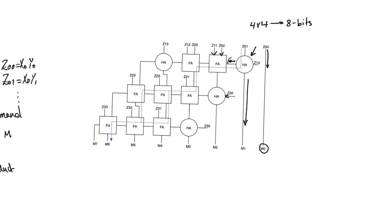In the next bit position we have three partial products plus the carryout from the previous position. To add them we first use a full adder combining the carryout with z02 and z11. To preserve a regular structure, we use z02 and z11 here — though the order doesn't matter, as long as all bits in the current position are added properly. This full adder produces a sum bit and a carryout. Since there's still one more partial product remaining, we add it to produce m2, with another carryout going forward.